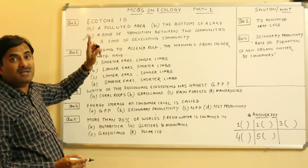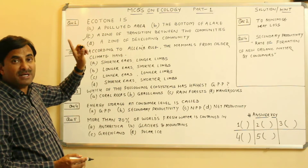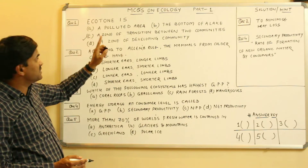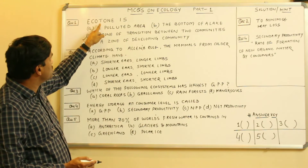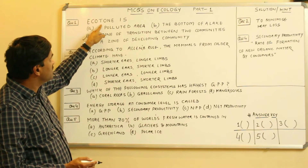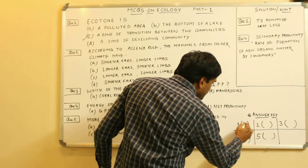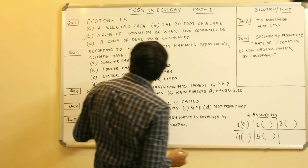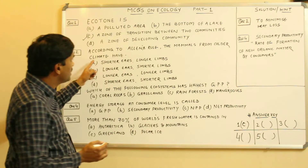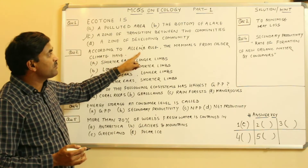This question has been asked at least two times in various medical entrance exams. Question number one has the answer C. Now, question number two is based on Allen's rule, which is given in the NCERT — that's why it is very important.